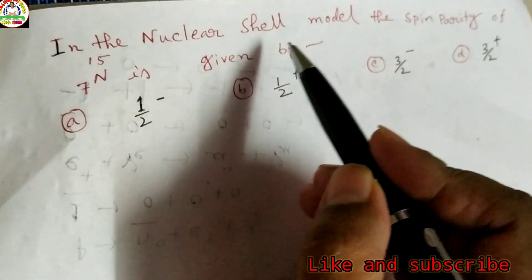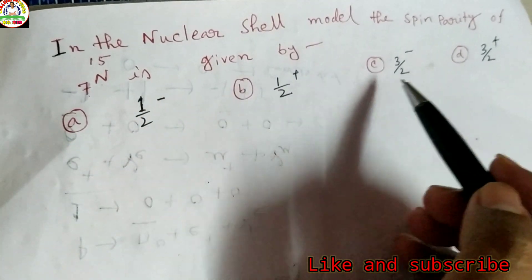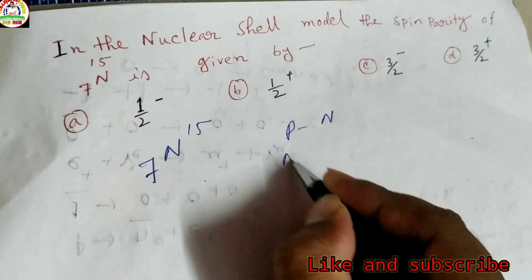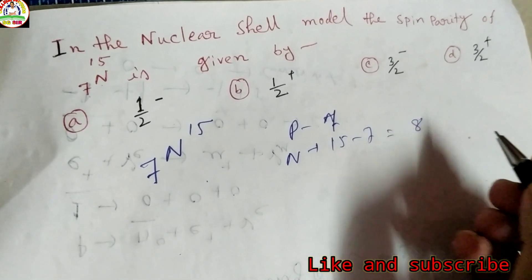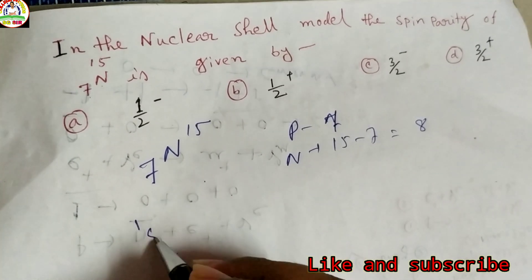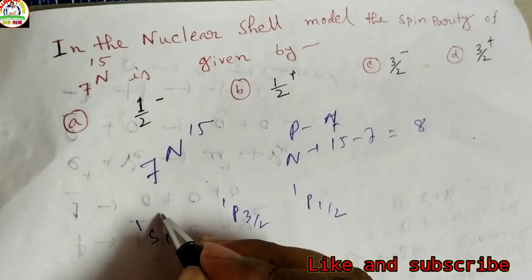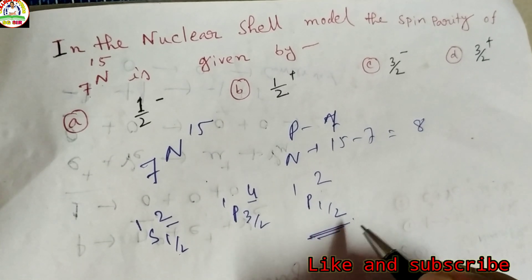Next problem: In the nuclear shell model, the spin parity of 7N15. The options are (1/2)-, (1/2)+, (3/2)-, or (3/2)+. Here, proton number is 7 and neutron number is 15 minus 7 equals 8. Using the shell order 1s(1/2), 1p(3/2), 1p(1/2), the filling goes 2, 4, 2, meaning positions 5, 6, 7 fall in 1p(3/2) and position 7 is the last unpaired proton in the 1p(1/2) level, giving spin parity (1/2)-.